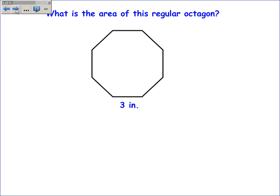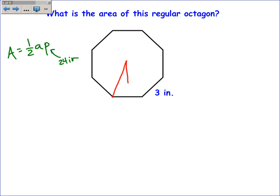For a regular octagon, the formula is still one half the apothem times the perimeter. There are 8 sides and each side is 3 inches, so the perimeter is 24 inches. To find the apothem, I draw in this triangle. The base length is half the side length, so it's 1.5. This angle is 360 divided by the number of sides doubled: 8 doubled is 16, and 360 divided by 16 is 22.5 degrees.